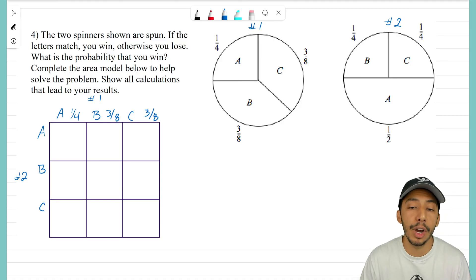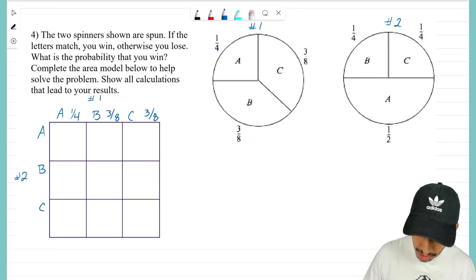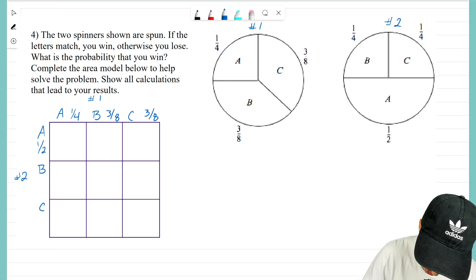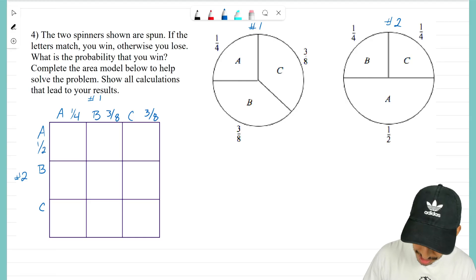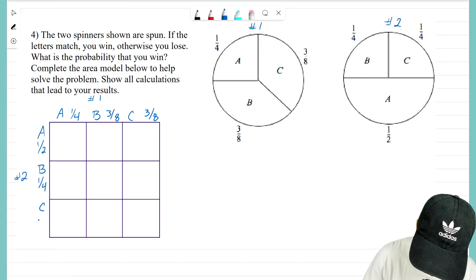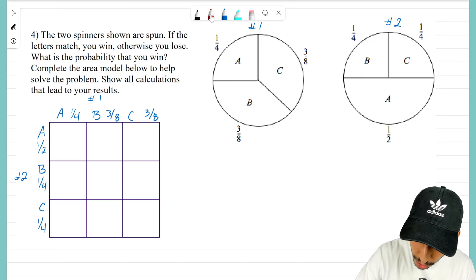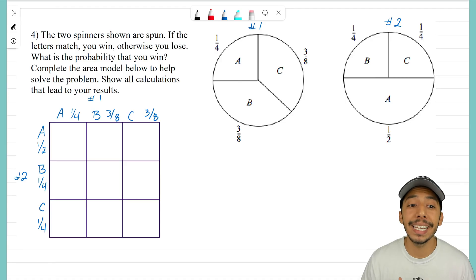Now let's set up spinner number two. Spinner number two—chance of getting an A is one-half, so I'll write one-half underneath. B and C both end up being one-fourth. Now we are not at all yet done with setting up our area model. All we've done is set up the size, which is good. It's what we want—we want each letter, we want each fraction, so that we can fill in the inside of our area model.